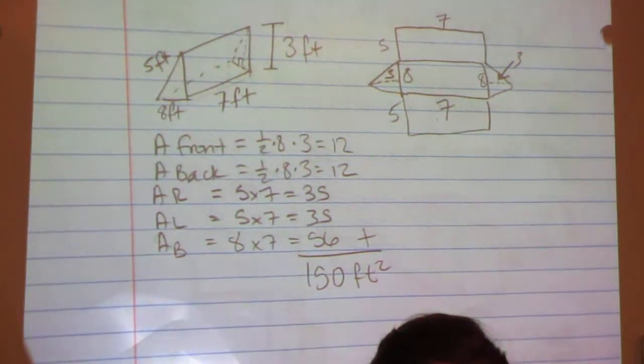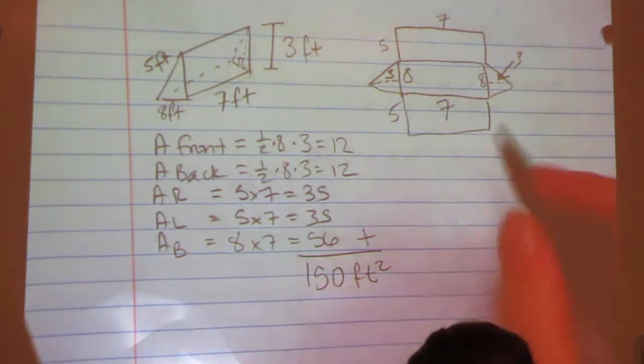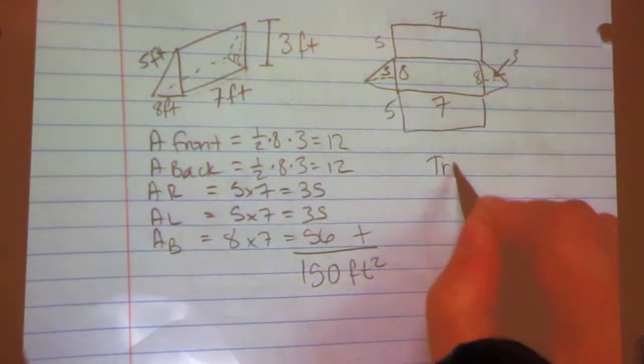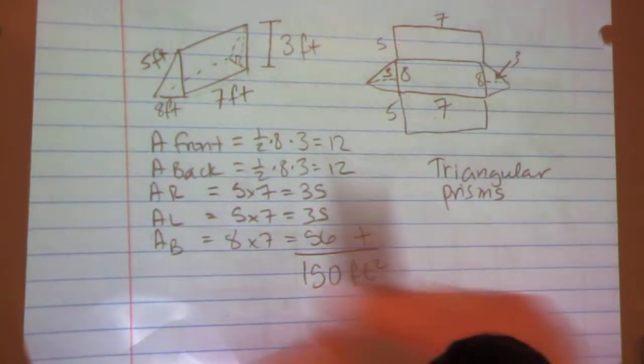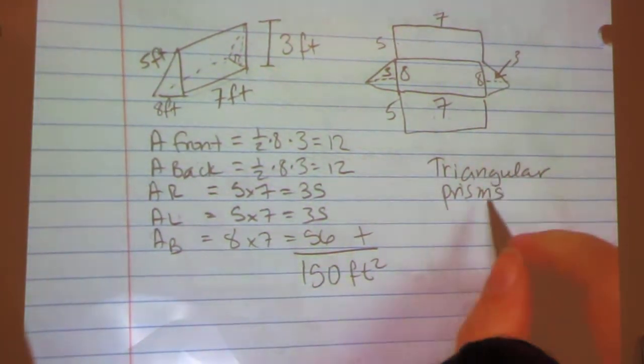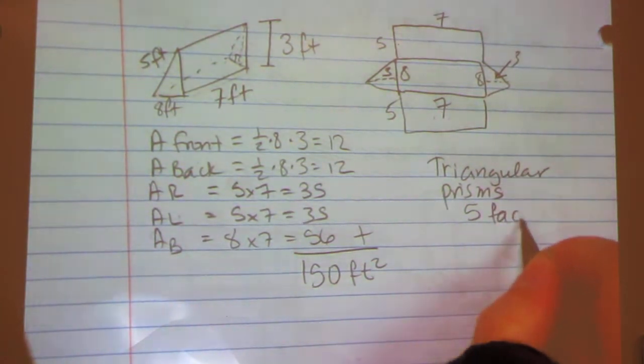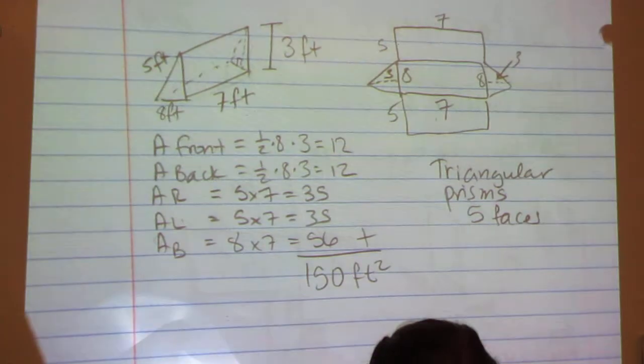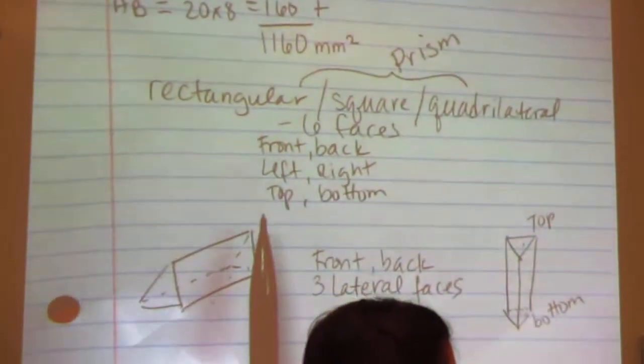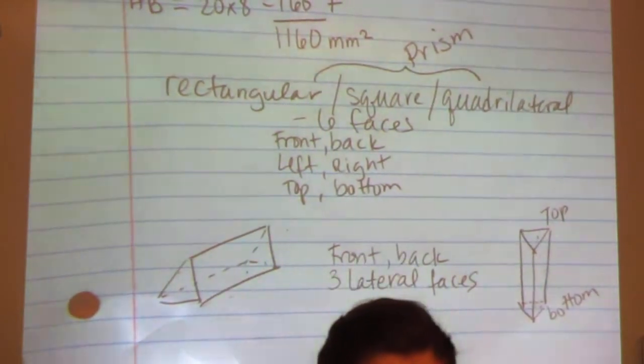The key is drawing the net. So as long as you draw the net and your triangular prisms have 1, 2, 3, 4, 5 faces. So if you're doing a triangular prism and you don't get 5 numbers, you're doing it wrong. If you have your rectangular pieces and you don't get 6 bases, you're doing it wrong.